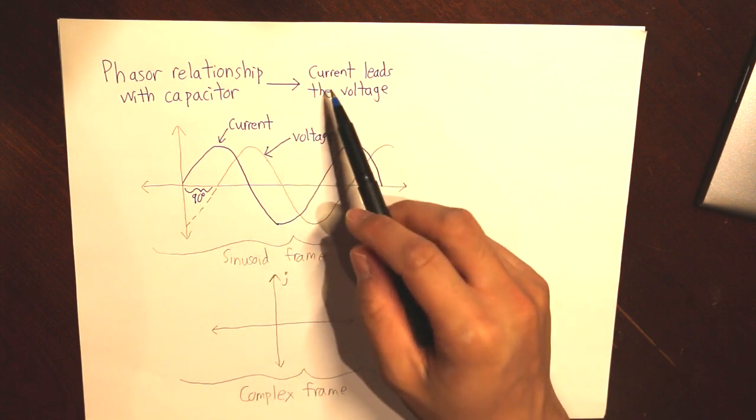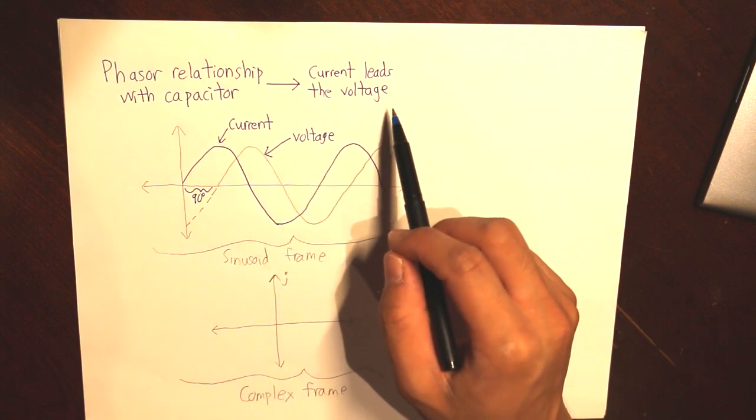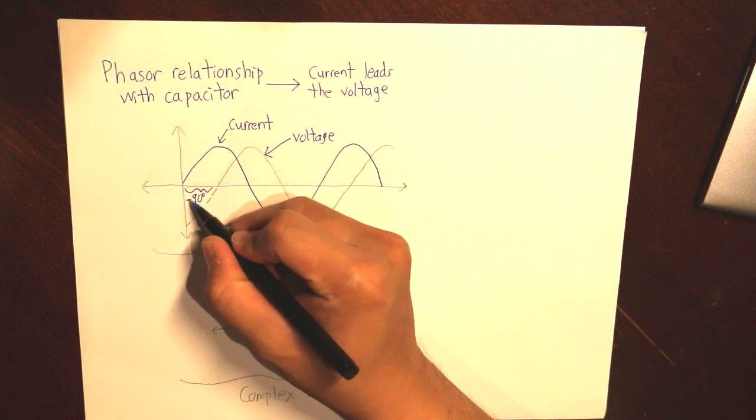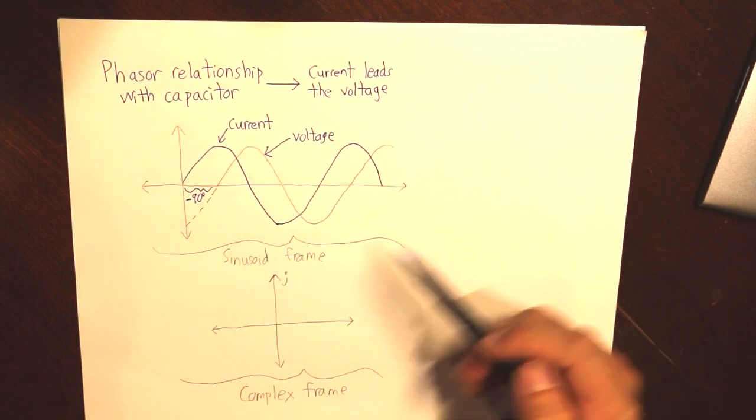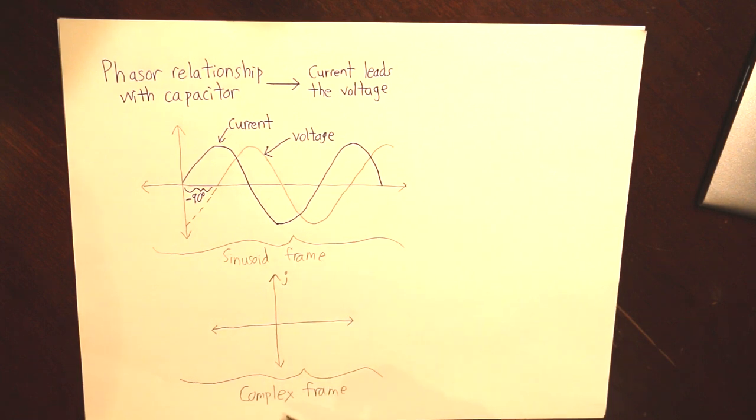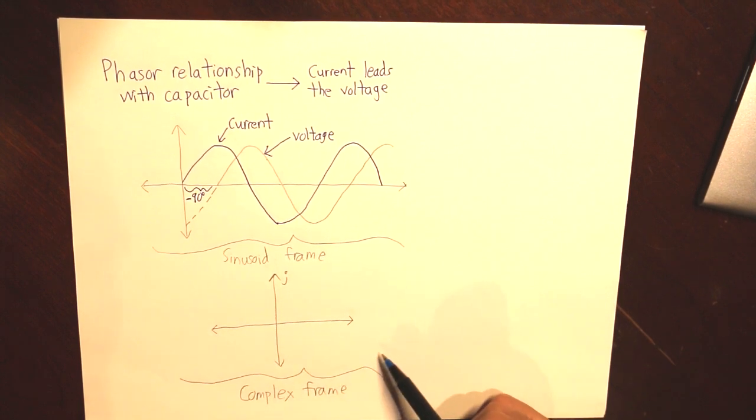In addition to that, since the current leads the voltage, that actually means that it is minus 90 because it's leading. Now that we got that from the sinusoid frame, we have to focus on the complex frame to see what it will look like in this particular scenario.